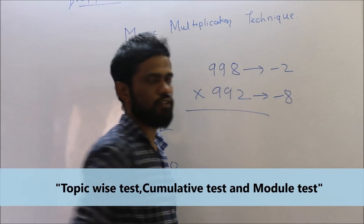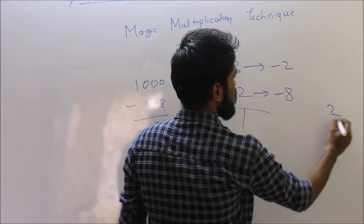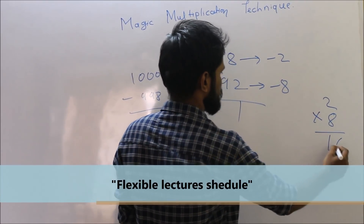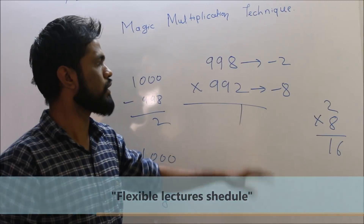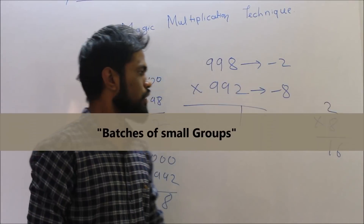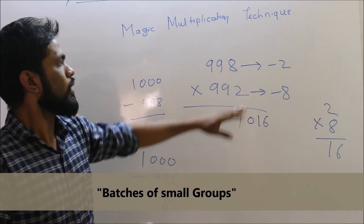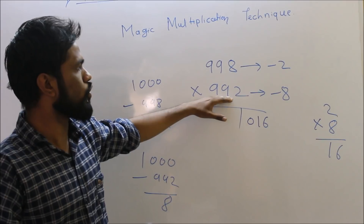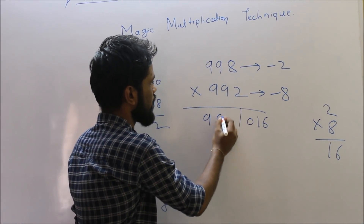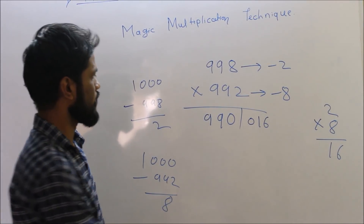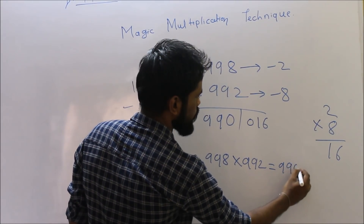Similarly, make two compartments. Multiply the differences: two multiplied by eight equals sixteen. Since we are solving three-digit numbers compared to one thousand, the last compartment must be three digits — so write it as zero-one-six. Then subtract two from nine hundred ninety-two: our answer is nine hundred ninety. Our final answer for nine hundred ninety-eight multiplied by nine hundred ninety-two is nine hundred ninety thousand and sixteen.